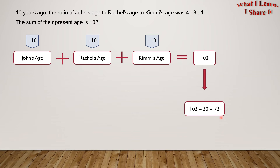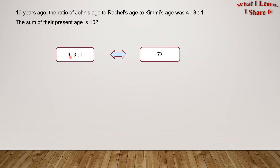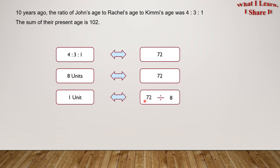But the ratio 10 years earlier was 4 to 3 to 1. So 4 to 3 to 1 corresponds to 72. This means 8 units correspond to 72. So 1 unit will correspond to 72 divided by 8, which equals 9.